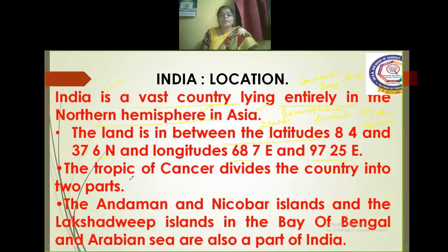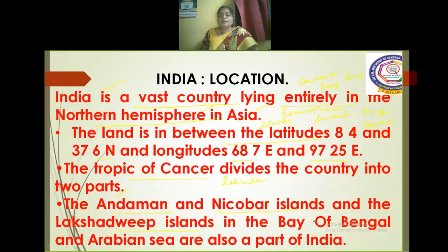The Tropic of Cancer is the latitude that divides the country into two parts. The Andaman and Nicobar Islands and the Lakshadweep Islands are in the Bay of Bengal and Arabian Sea respectively. Andaman and Nicobar is in the Bay of Bengal and Lakshadweep Islands are in the Arabian Sea.